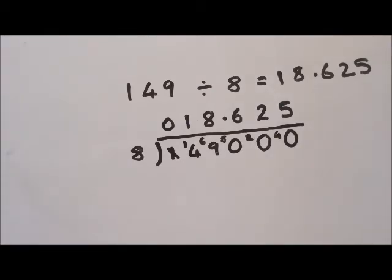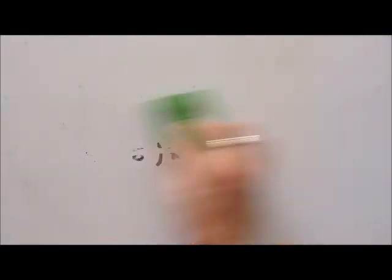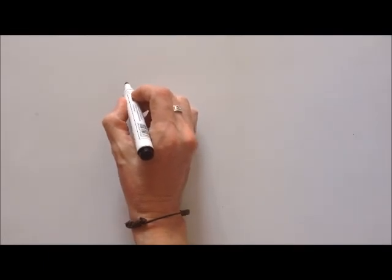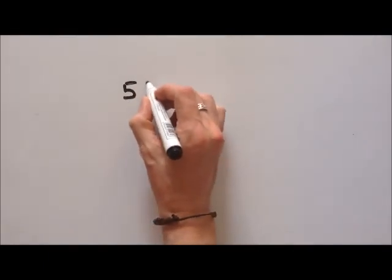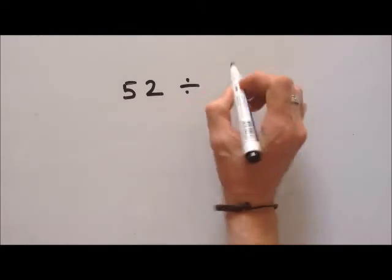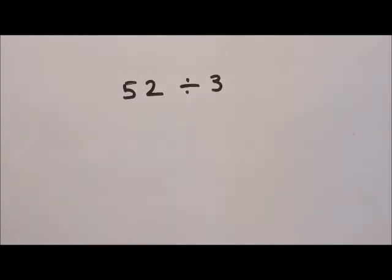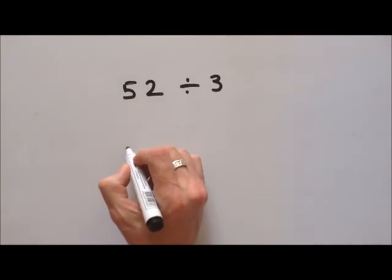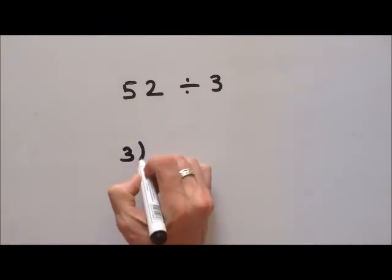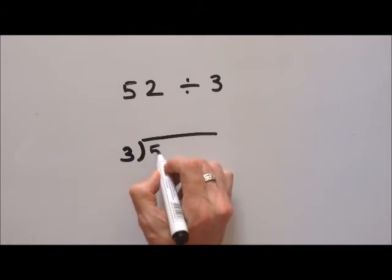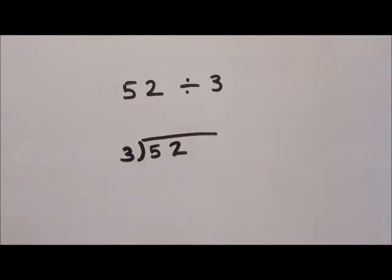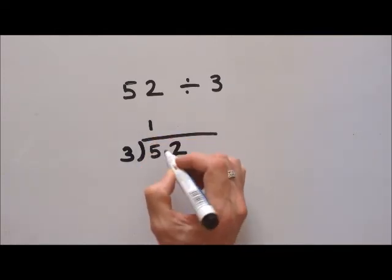Let's do one more — this one's a little bit special and I'll explain when we get to the point of difficulty. Fifty-two divided by three. Put it in our bus stop — three on the outside, fifty-two inside. How many threes can we get out of five? We can get one with a remainder of two.